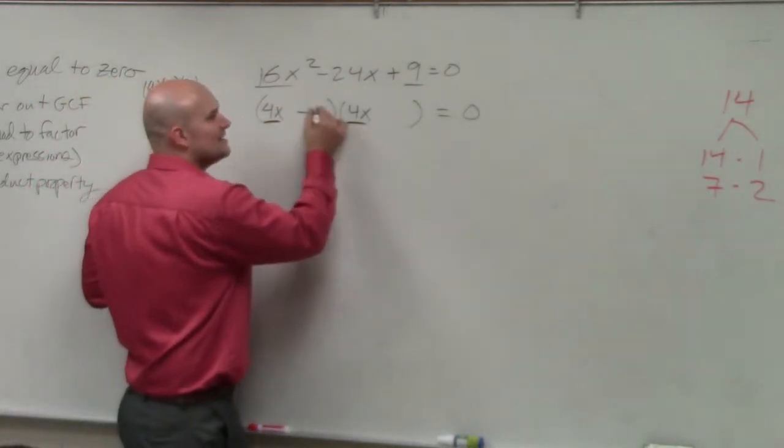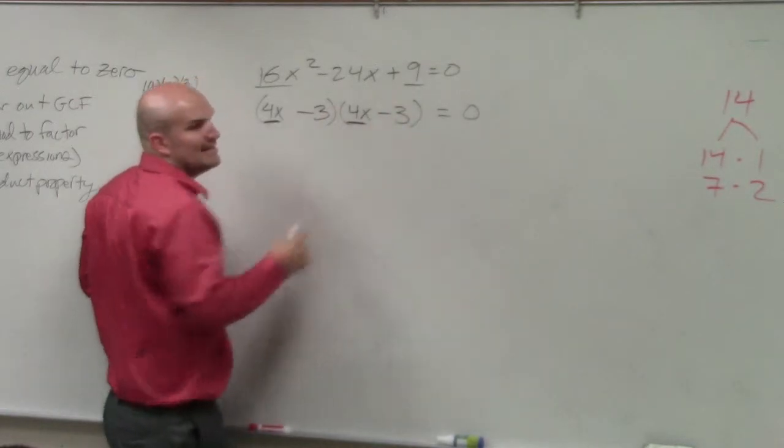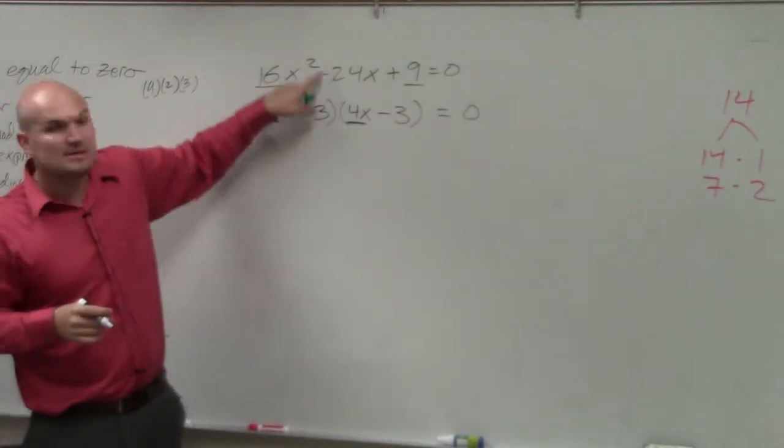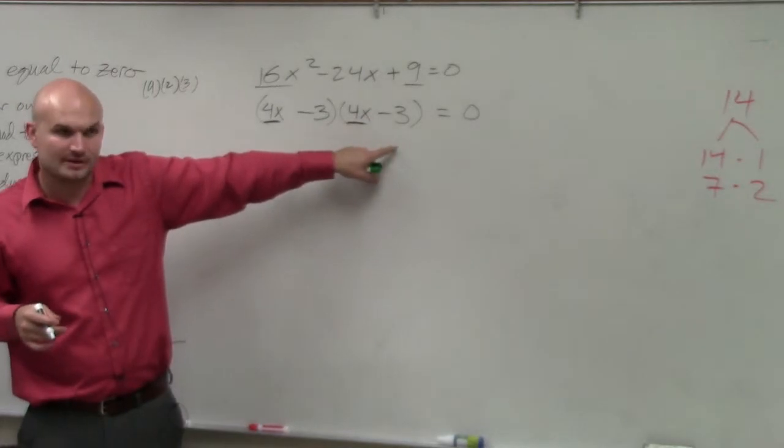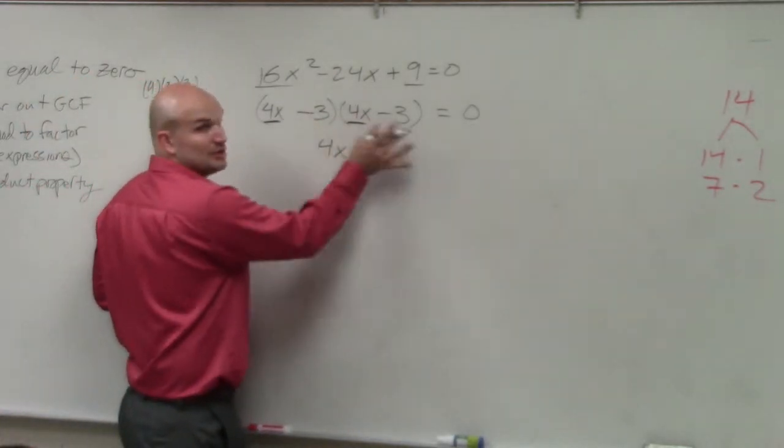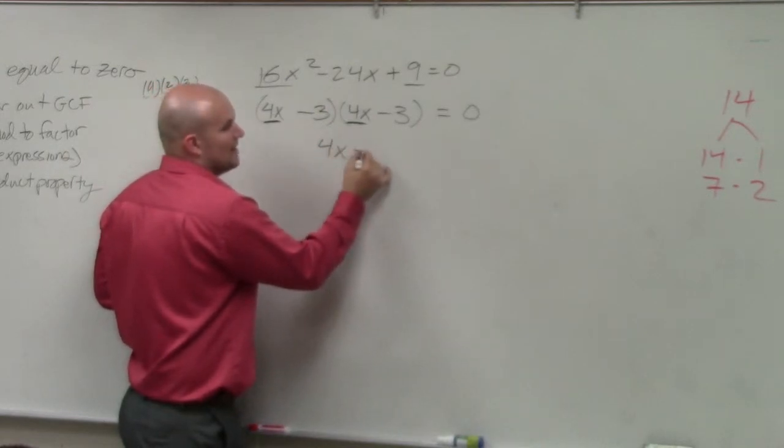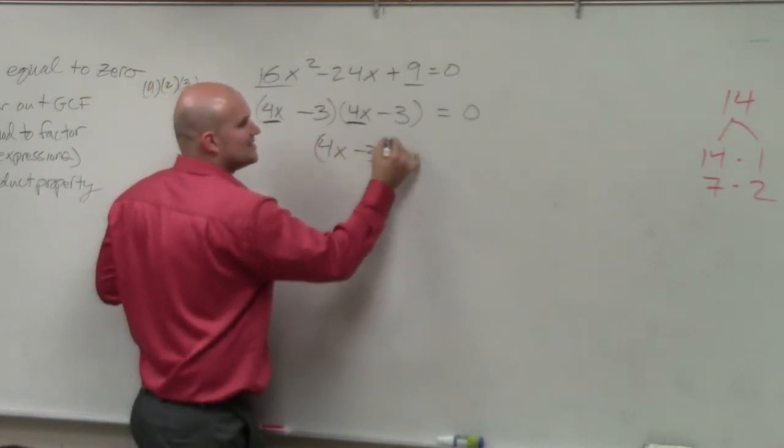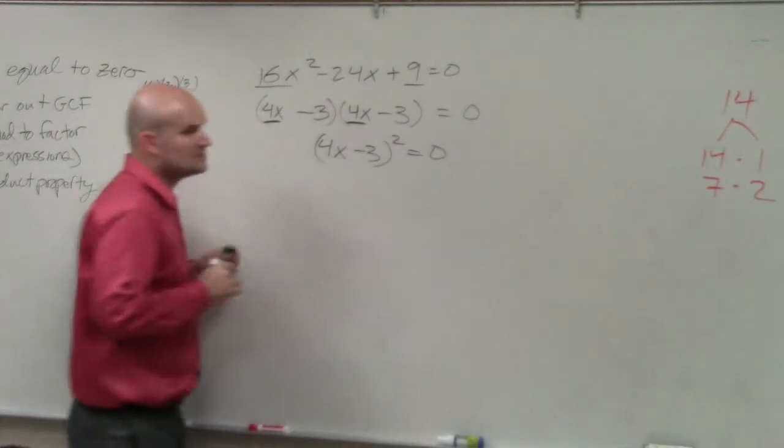If this was a positive 24, then it'd be positive 3 and positive 3. So therefore, I can just rewrite. I could use zero product property from here. Or, Brandon, I could just write this as 4x minus 3 squared equals 0.